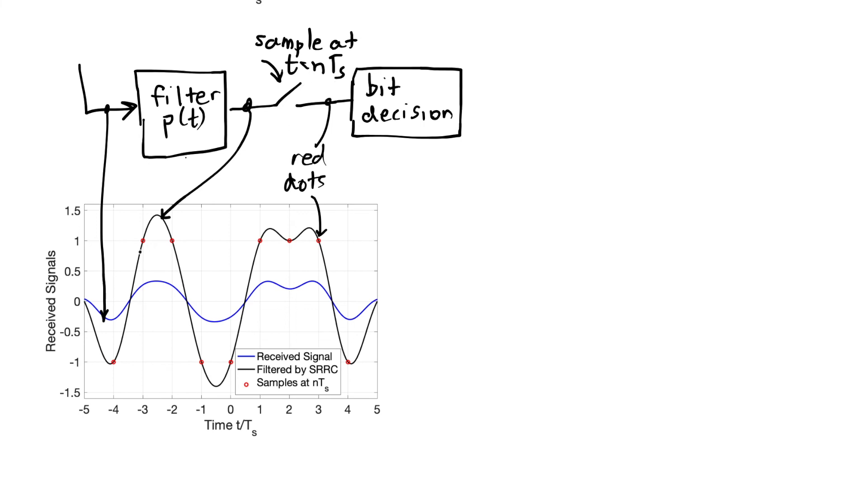Those red dots are the values at the sample times of nt sub s. Minus four, minus three, minus two, minus one, zero, one, two, three, four. And so that's where I get these nine values now that are either minus one or one. And those go into my bit decision.